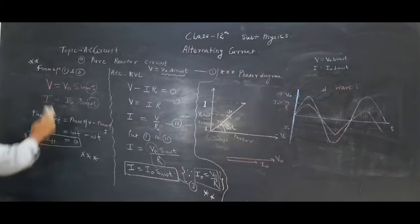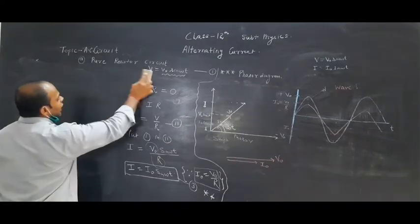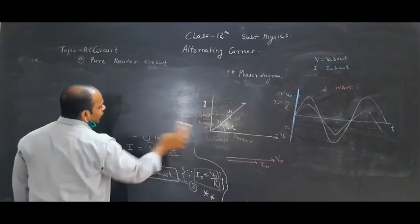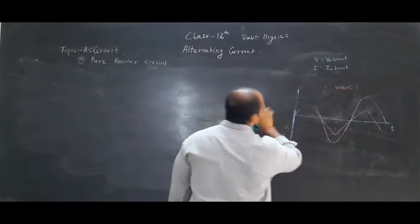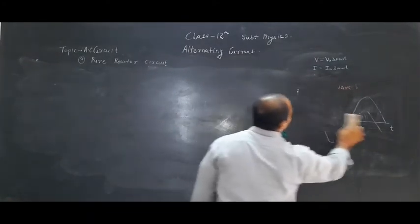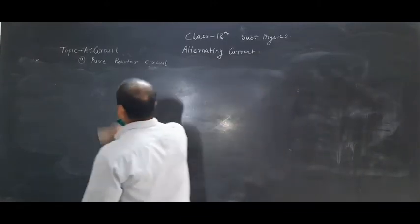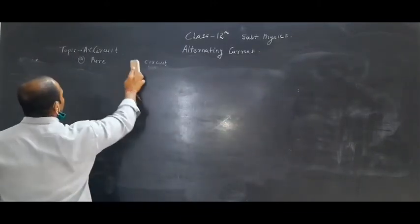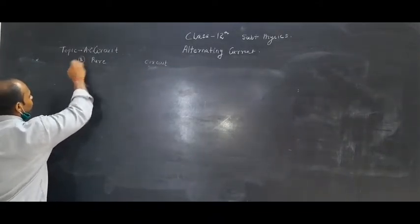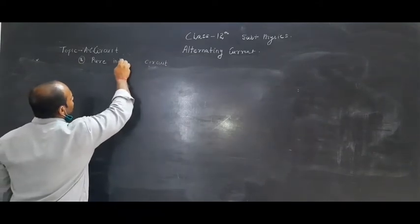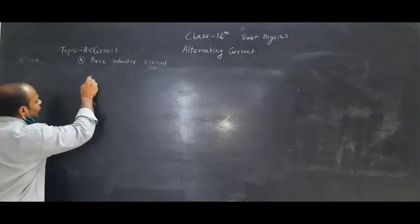Now the next circuit is the pure L circuit — pure inductor circuit. Topic B is pure inductor, that is L circuit. In the L circuit, we simply connect one inductor to an AC source. L is measured in Henry.